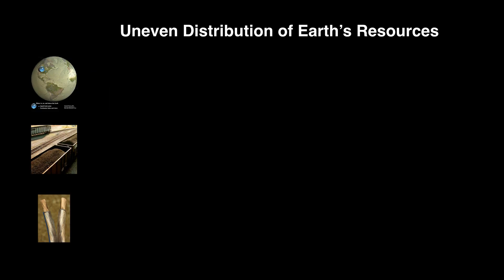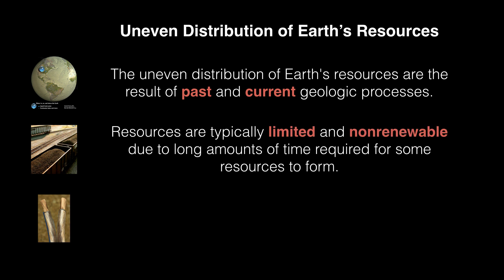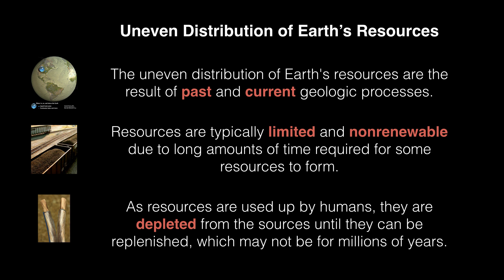In summary, the uneven distribution of Earth's resources is the result of past and current geologic processes. Resources are typically limited and non-renewable due to the long amounts of time required for some resources to form. As resources are used up by humans, they are depleted from their sources until they can be replenished, which may not be for millions of years.